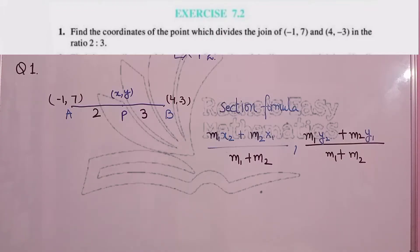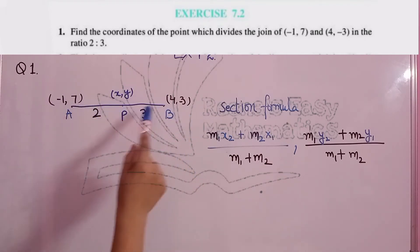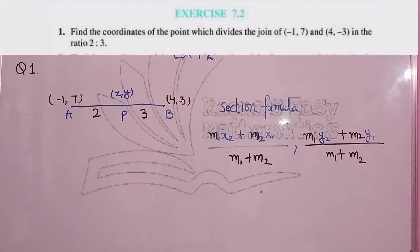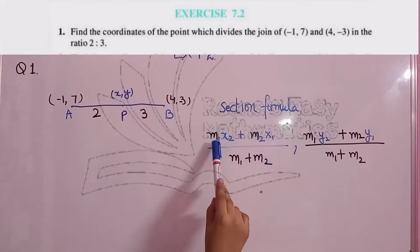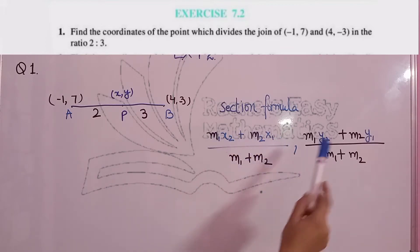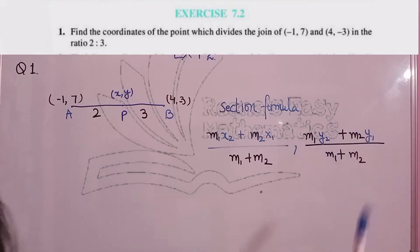Now we have to find the coordinates of the point which divides (-1, 7) and (4, -3) in the ratio 2:3. To find the coordinates of point P, we have to use the section formula. For X: (M1·X2 + M2·X1) / (M1 + M2), and for Y: (M1·Y2 + M2·Y1) / (M1 + M2). Now we just put the values in and we can easily get the answer.